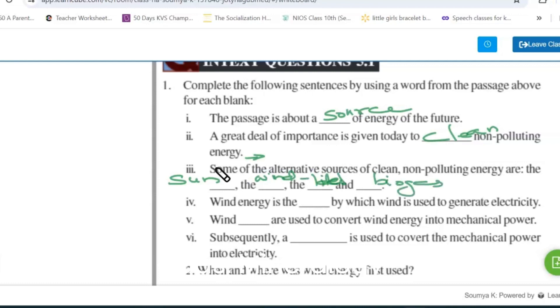Wind energy is the blank by which wind is used to generate electricity. Wind energy is the source by which wind is used to generate electricity.